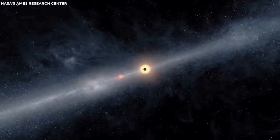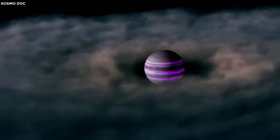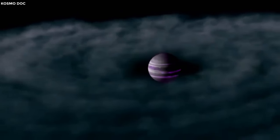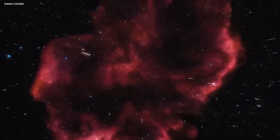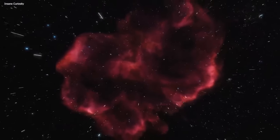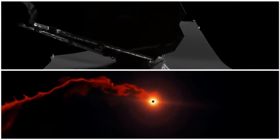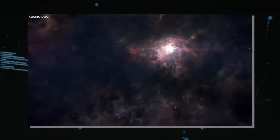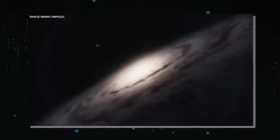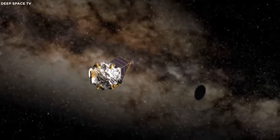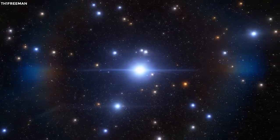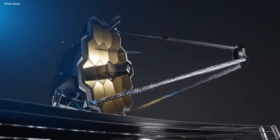The JWST's primary mirror, made up of 18 hexagonal segments coated in gold, is a marvel of engineering. Its large size and precision enable the telescope to capture incredibly detailed images of distant celestial objects. Positioned at the Sun-Earth Lagrange 2 point, about 1.5 million kilometers from Earth, the JWST enjoys a clear view of the cosmos, free from atmospheric interference, allowing it to deliver clearer and more accurate observations than ever before.